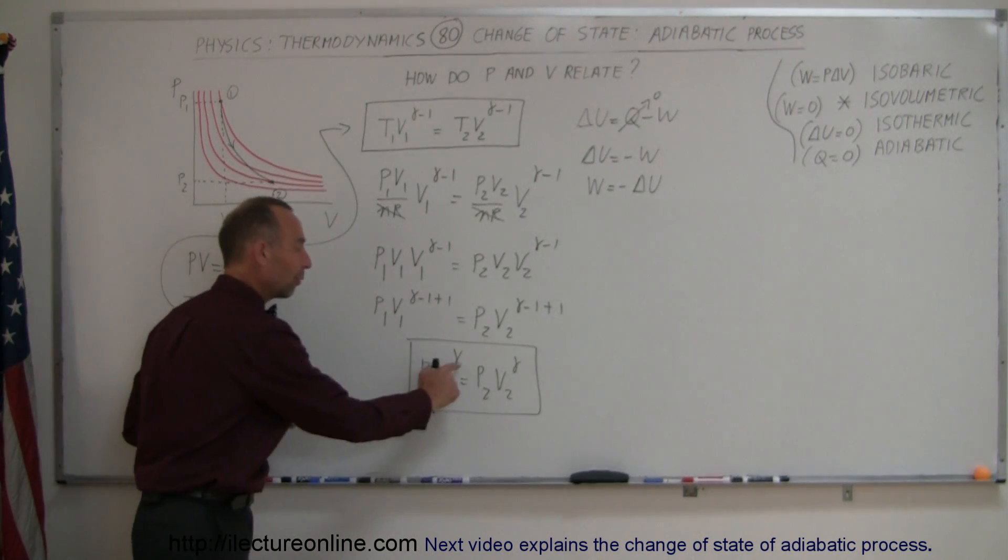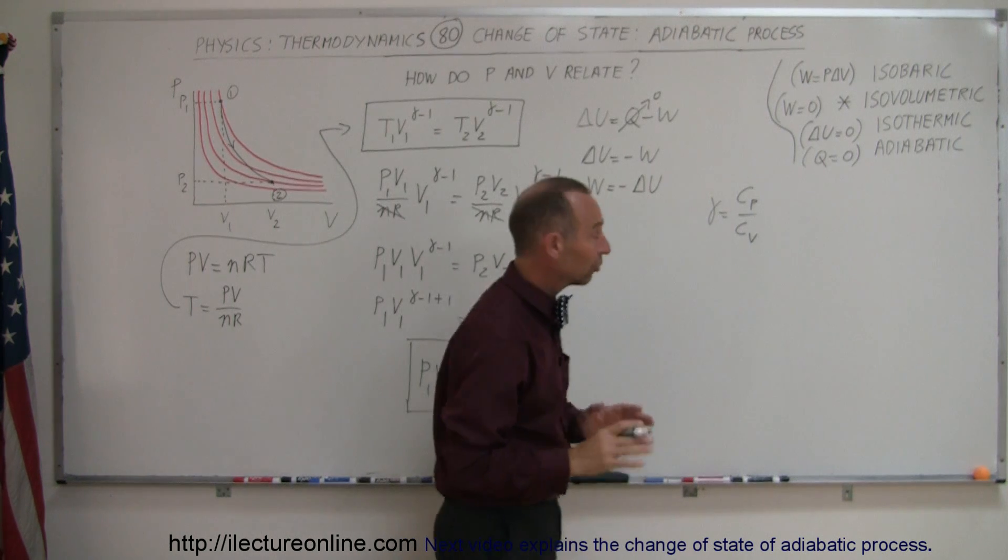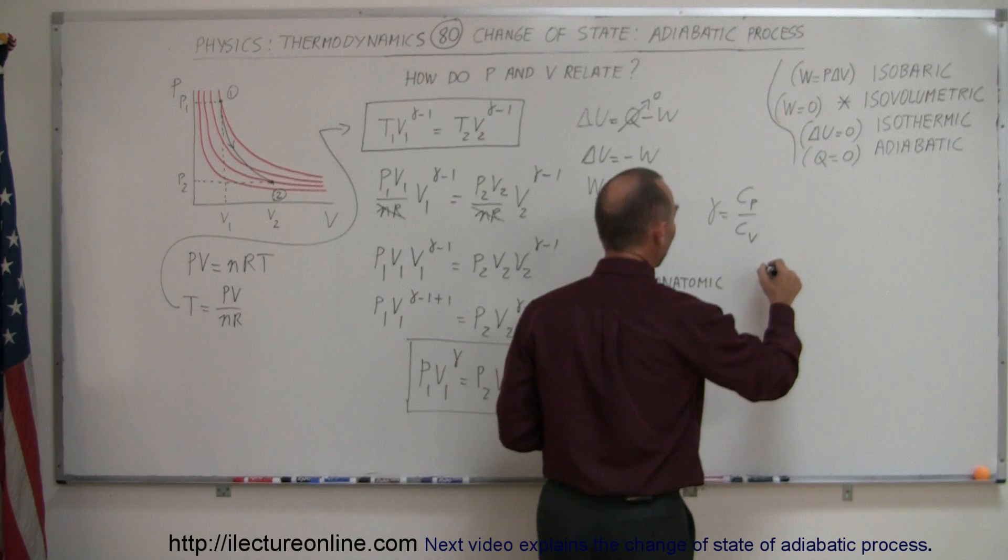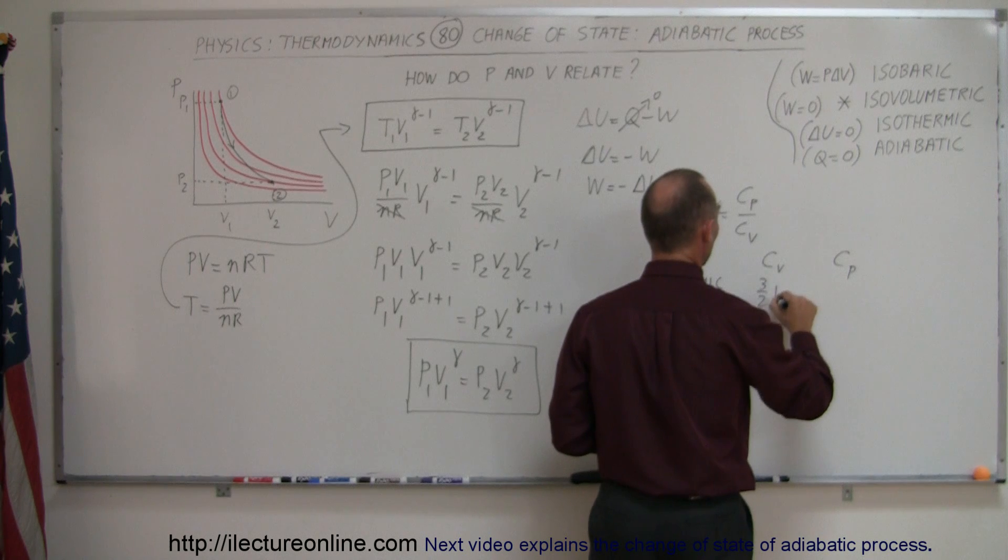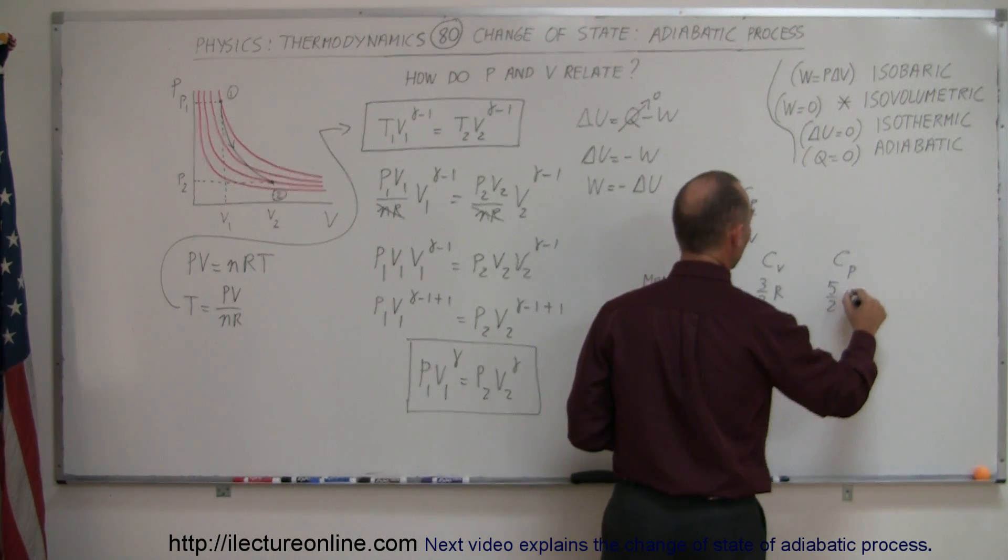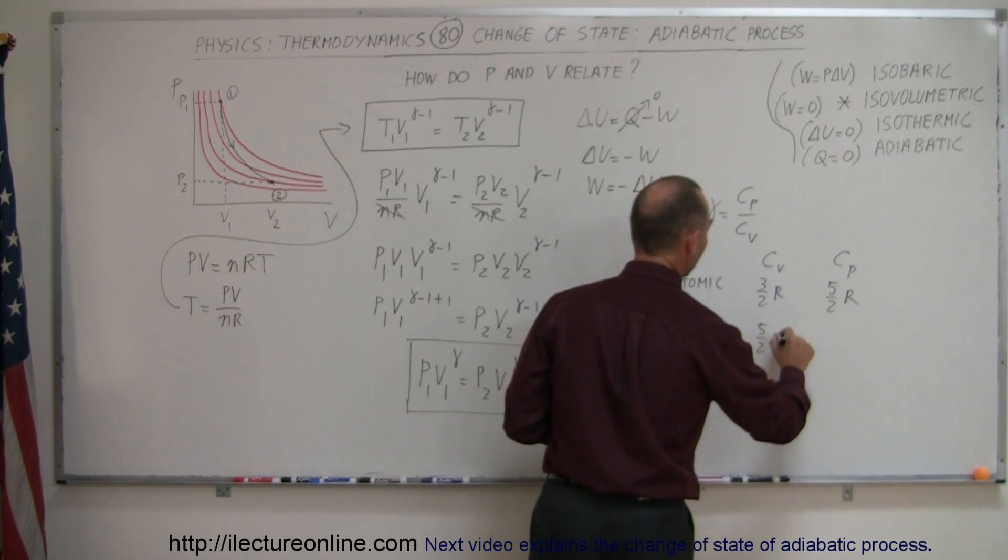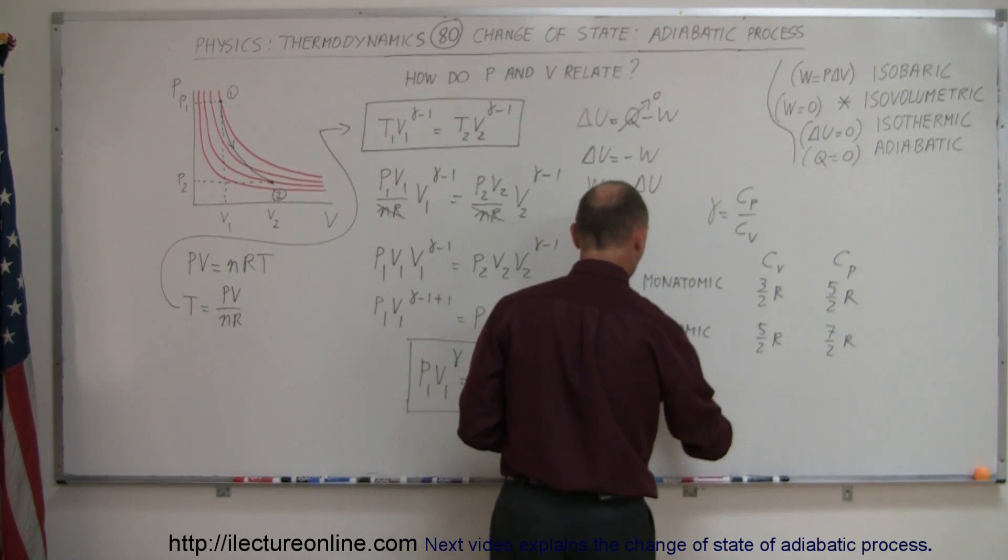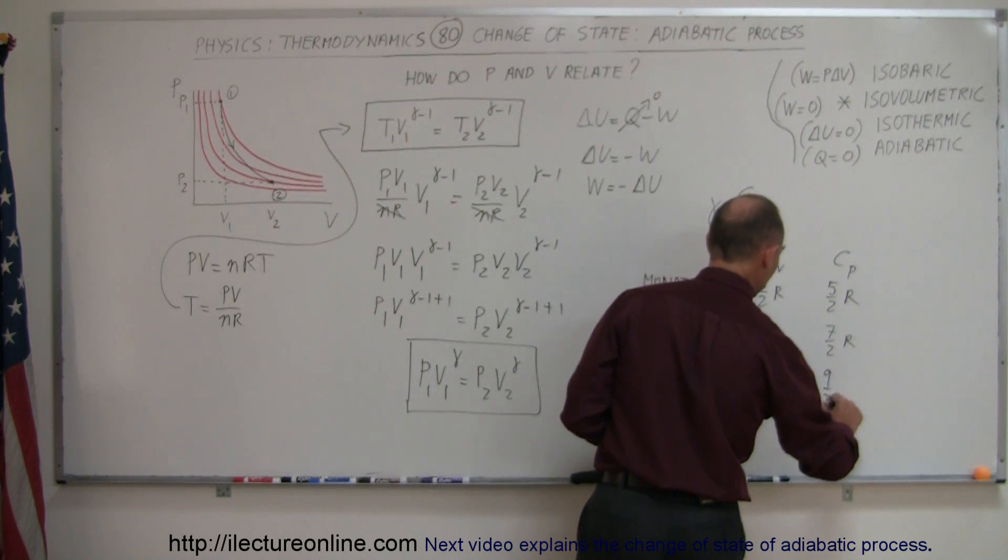If you don't remember what gamma stands for, remember that gamma is equal to the ratio of c sub p divided by c sub v. Those values depend on what gas you're talking about. If we have a monatomic gas, c sub v is 3 over 2 r and c sub p is 5 over 2 r. For a diatomic gas, c sub v is 5 over 2 r and c sub p is 7 over 2 r. For a triatomic gas, c sub v is 7 over 2 r and c sub p is 9 over 2 r.